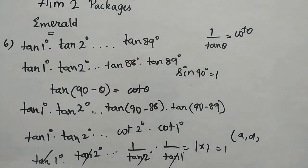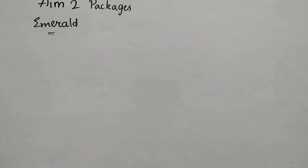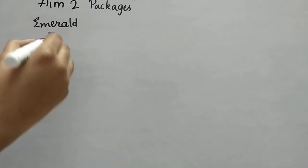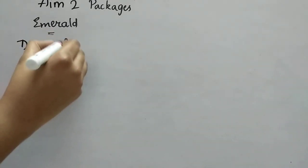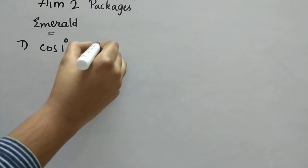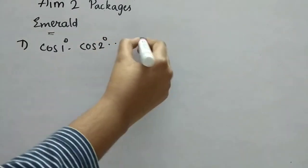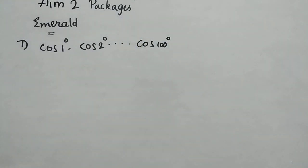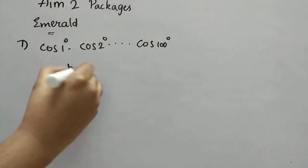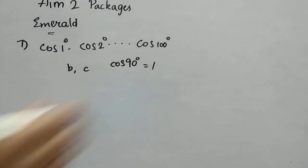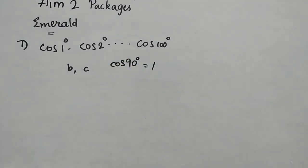Now the seventh question: cos 1° × cos 2° × cos 3° × ... × cos 100°. Using the same approach as the previous question, since cos 90° = 0, the entire product becomes 0. The answers are B and C — that is 0 and cos 90°.